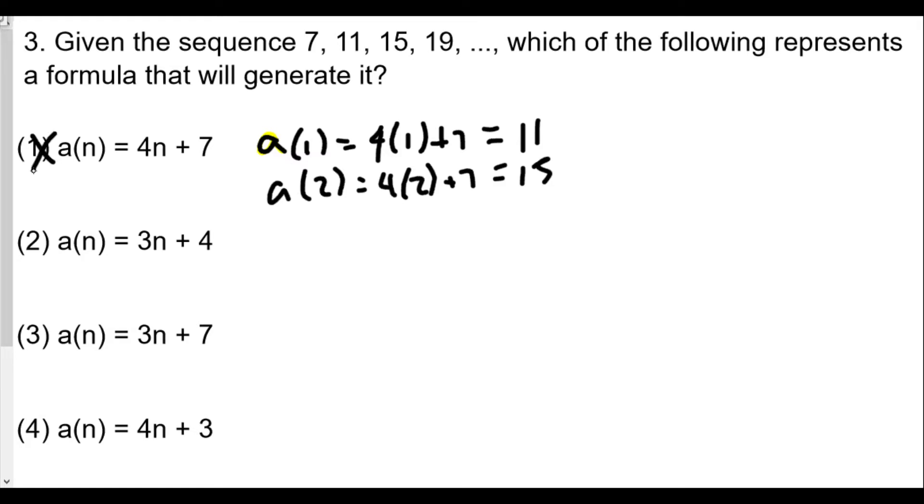Let's try number 2. A1, 3 times 1 plus 4, that's 7. That's good, so that covers the first one. A2, 3 times 2 plus 4, that gives us 6 plus 4 is 10. No, that's not it either. It can't be this one.